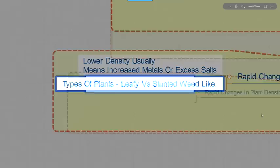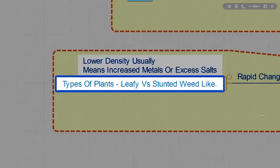The types of plants, leafy versus stunted and weed like. Leafy plants do not like any kind of metals. So you want to be looking for that kind of situation where you're seeing some stunted growth.